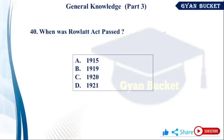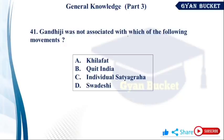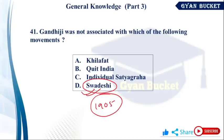Question number 40: When was the Rowlatt Act passed? The Rowlatt Act was passed in 1919 — option number B. Gandhi was not associated with which of the following movements? The Swadeshi Movement — Gandhi was not part of it because when Bengal Partition happened in 1905 and Swadeshi launched, Gandhi was in South Africa.